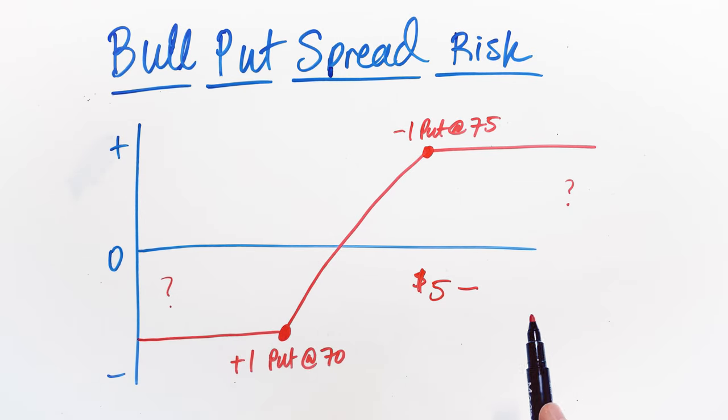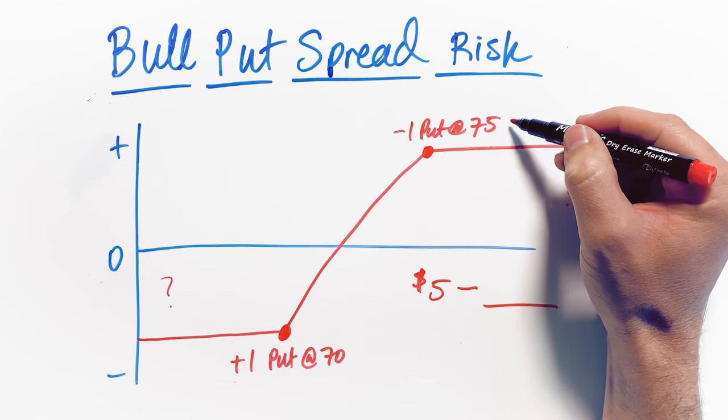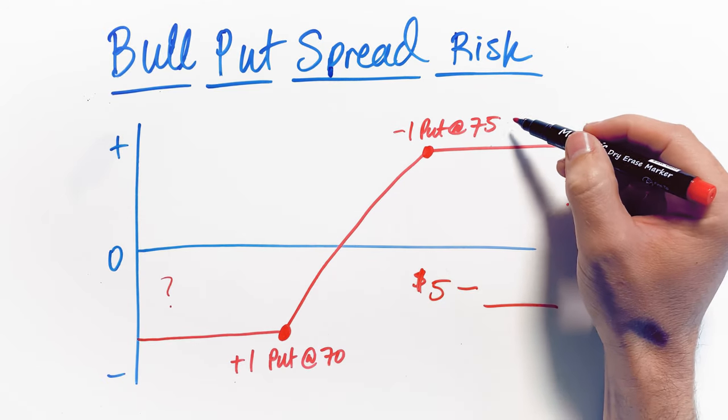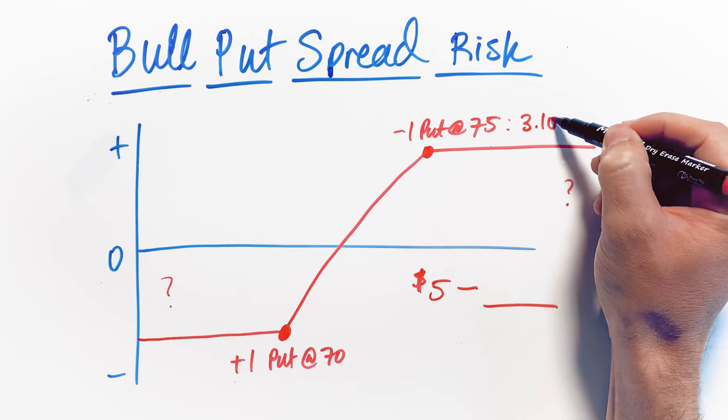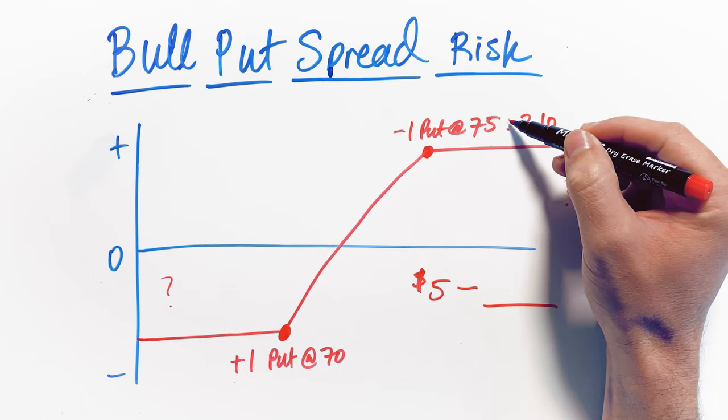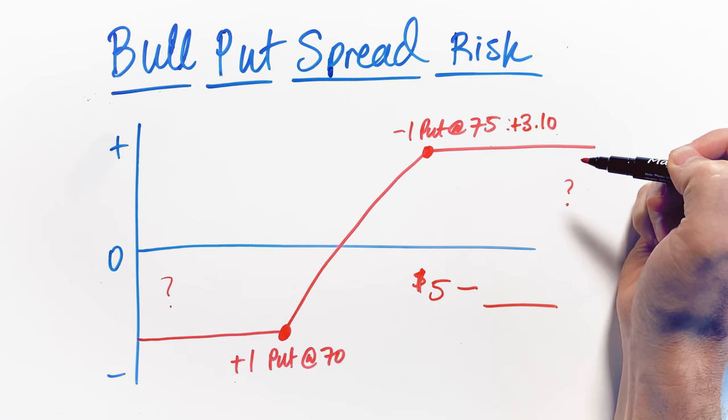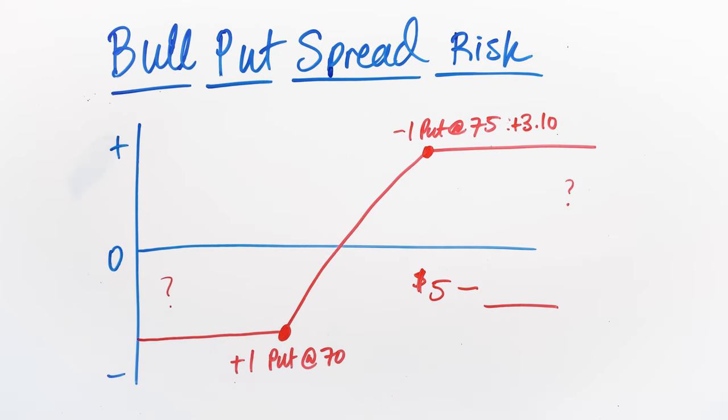Now, what we have to do is we have to take this $5 total spread width and we subtract the net credit that we collected from the individual contracts that we had sold. Let's assume for the sake of argument that we had sold this one put option at a 75 strike and we had sold that for a $3.10 premium. Essentially, we collected a $3.10 premium for that individual leg.